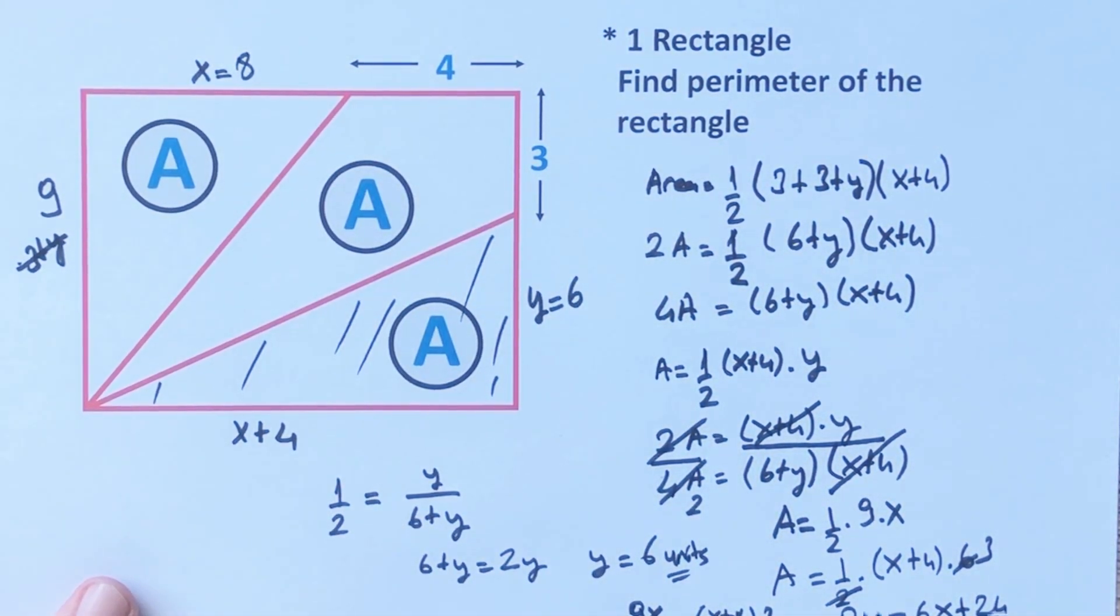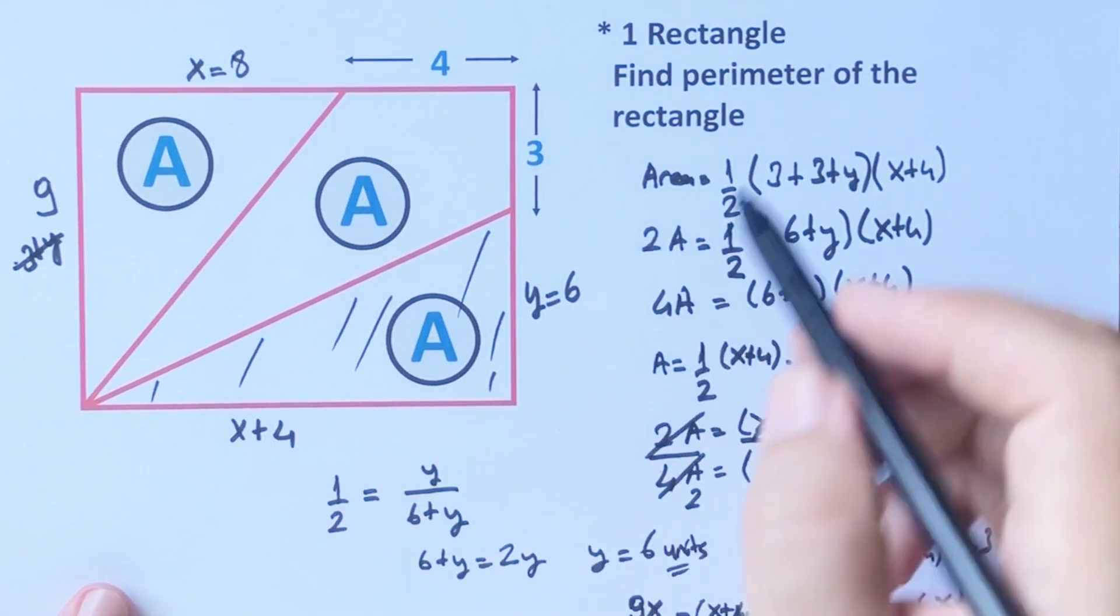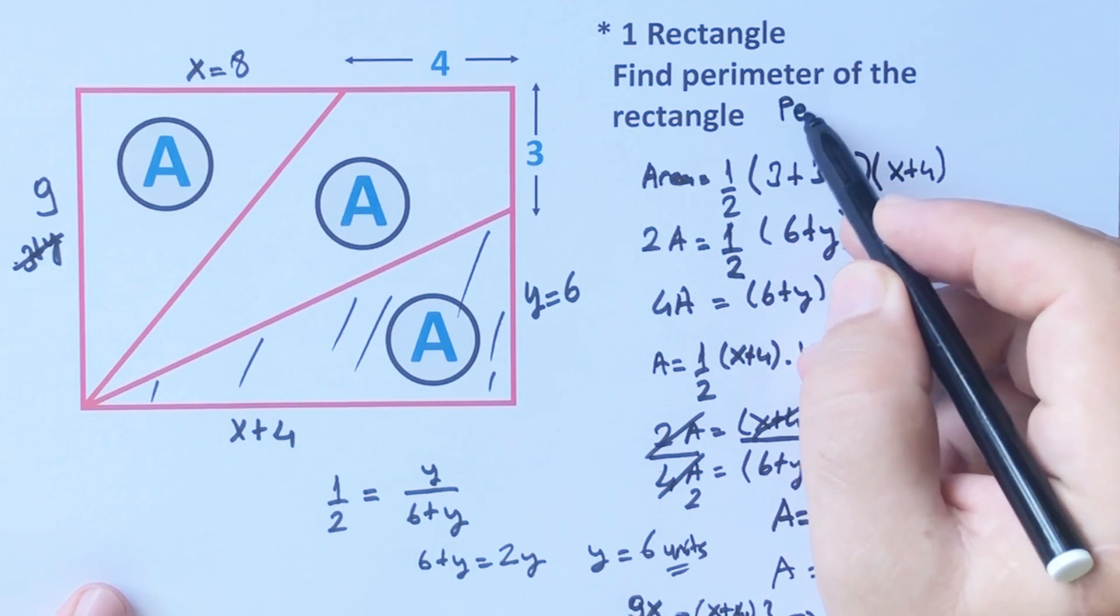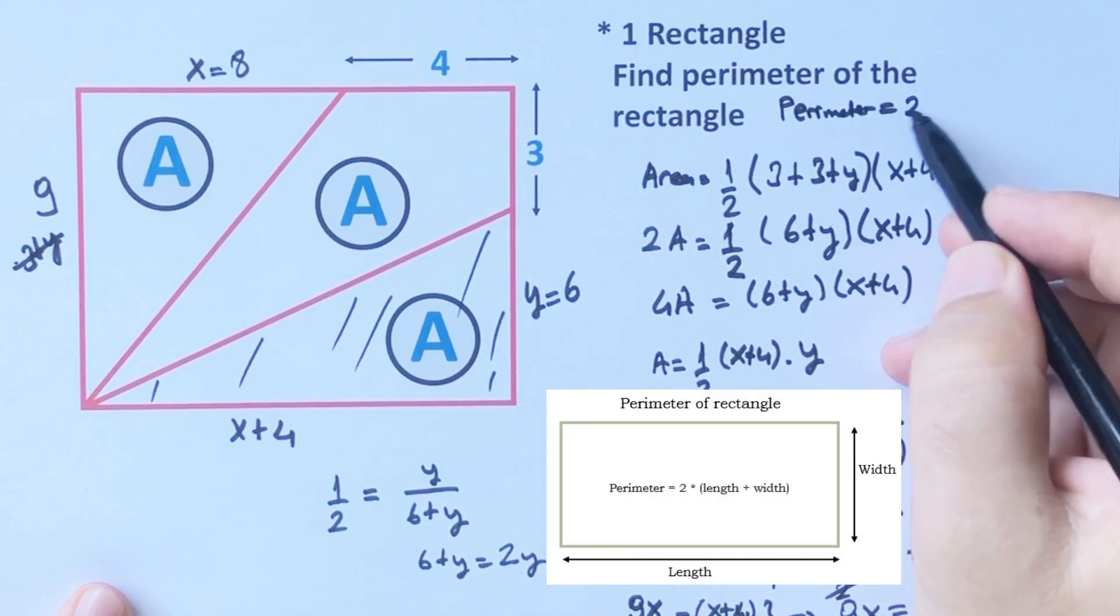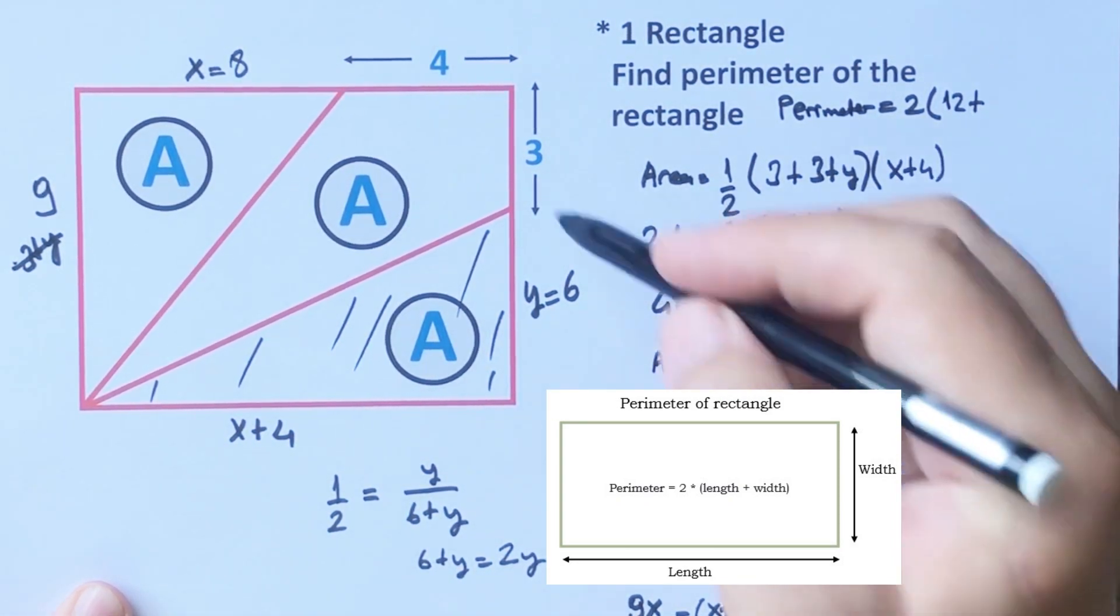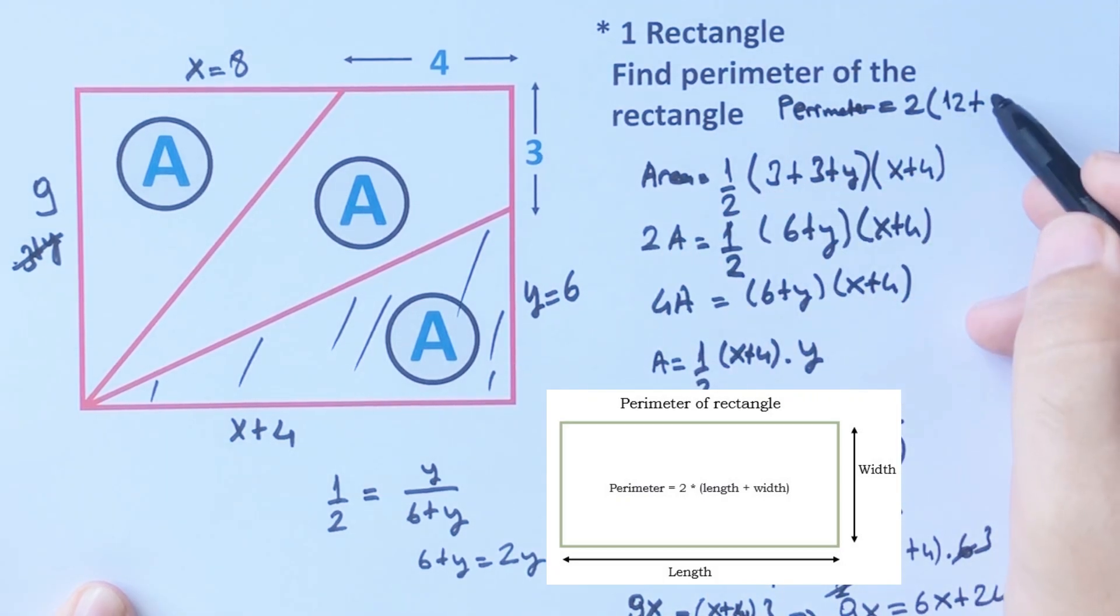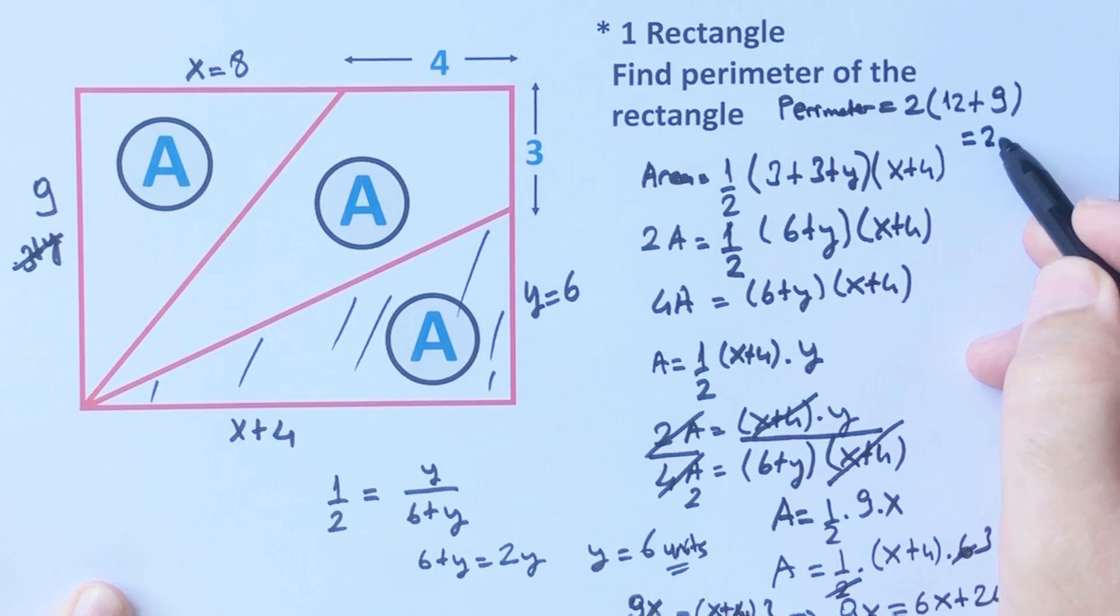So here is 8 units. Therefore, if we calculate the perimeter of the rectangle, perimeter equals 2 times 12 plus 9. Therefore, the perimeter of the rectangle is going to be 42 units.